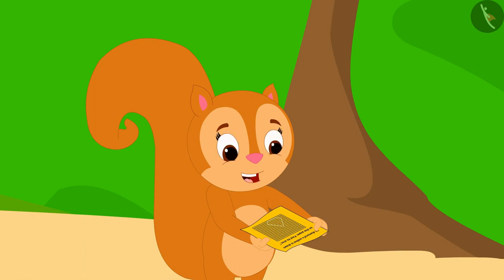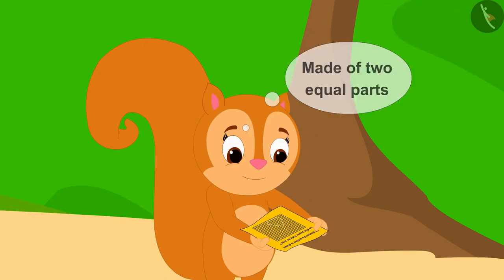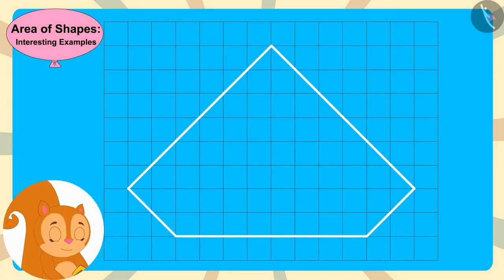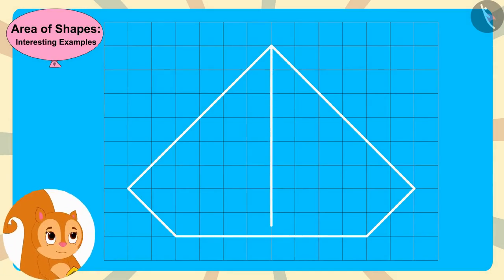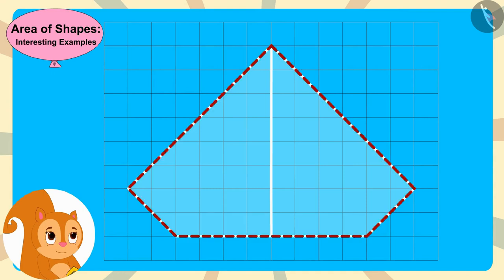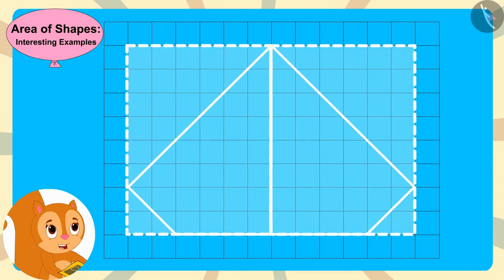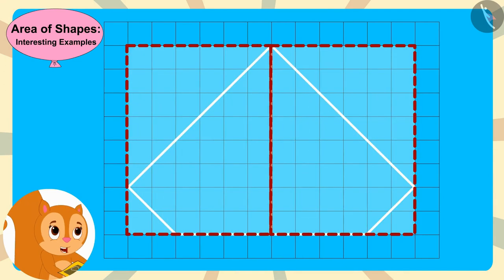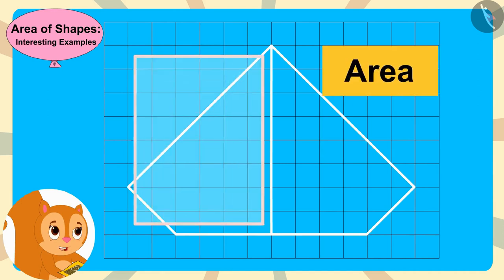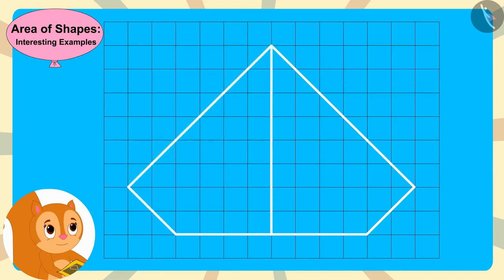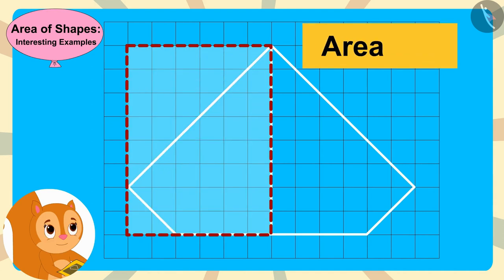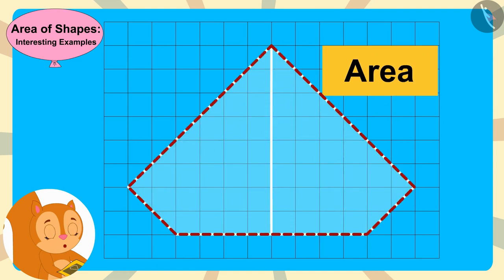This diamond's outline is made of two equal parts, thought Chanda. Chanda then drew a vertical line inside the outline of the diamond. Because this diamond is made of two equal parts, if she were to find the area of only one part, she would multiply it by two to find the area of the entire diamond.